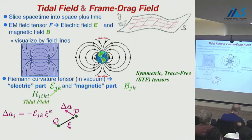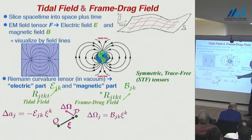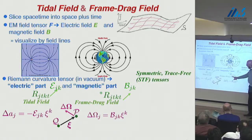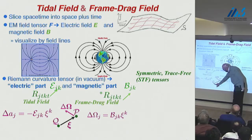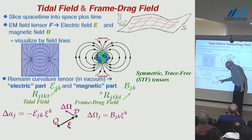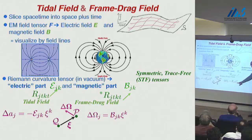Less familiar is the frame-drag field. That is obtained by taking a dual of the Riemann tensor from one side, using the Levi-Civita tensor to convert two spatial indices into one, and then looking at the space-time, space-time part. That gives you a measure of differential frame-dragging, in the sense that if you have two gyroscopes, one at Q and one at P, and you watch the precession of one gyroscope due to dragging of inertial frames, the angular velocity relative to the gyroscope at Q is just the contraction of the separation vector into the frame-drag field.